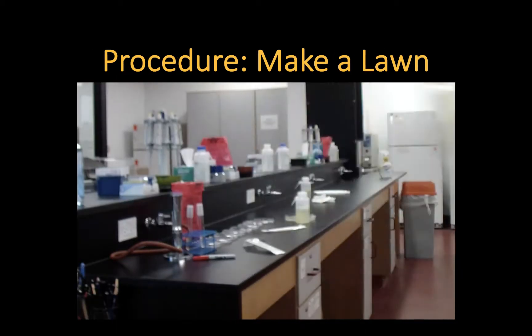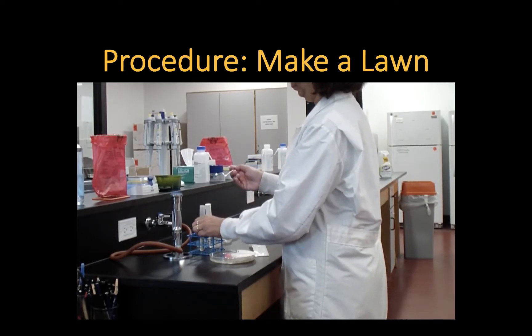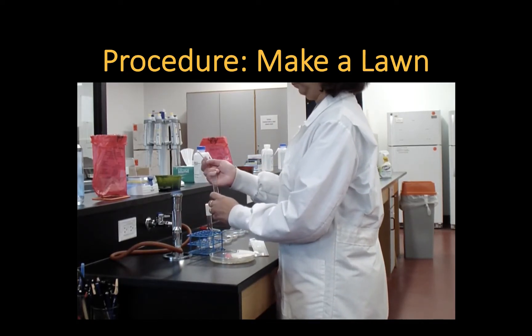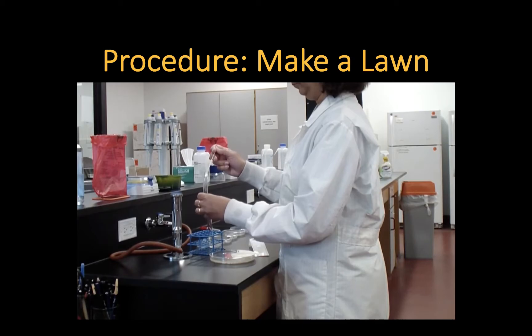Now you're going to make a bacterial lawn. To do this, you use sterile technique. Remove the cap of the tube, keep it in your hand, and flame the top of the tube.